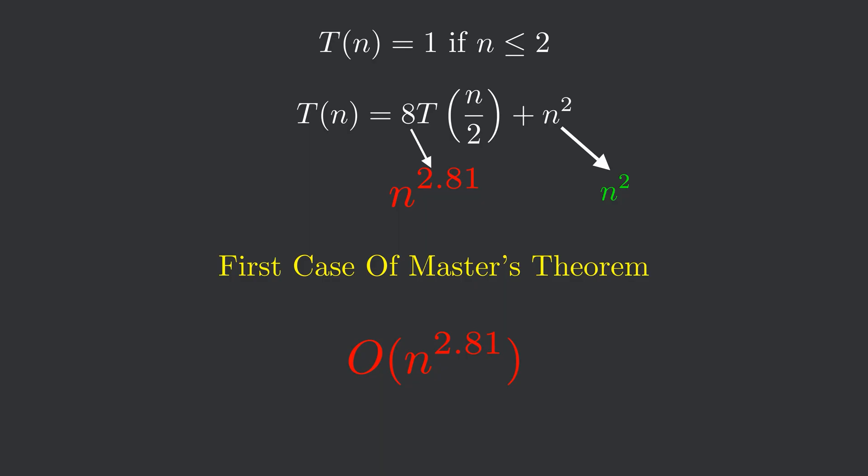So, Strassen's algorithm reduces the complexity down from n-cube to n to the power 2.81.